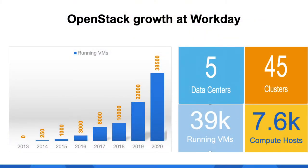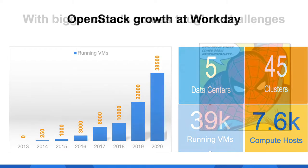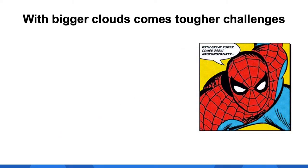OpenStack is continuing to grow within Workday. Over the last few years we've seen more and more applications running on the OpenStack platform. As of now we have approximately 39,000 VMs running on this OpenStack platform, over 45 clusters spread across five different data centers in the United States and in Europe. Just as with great power comes great responsibility, with bigger clouds come tougher challenges.